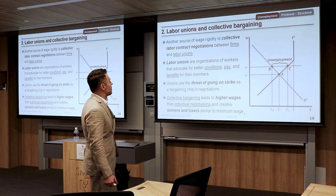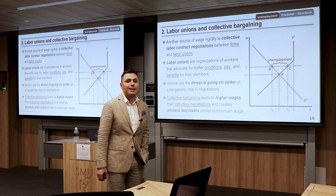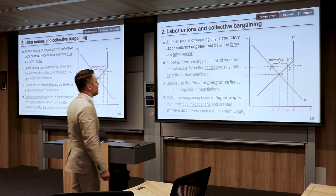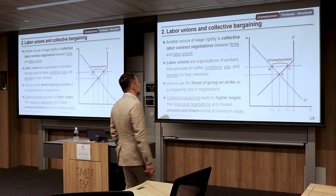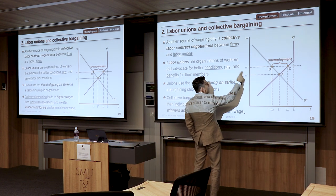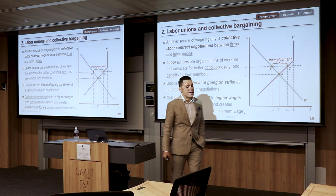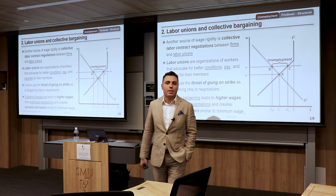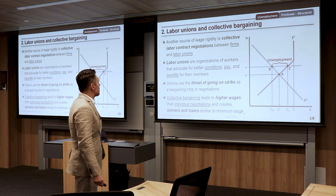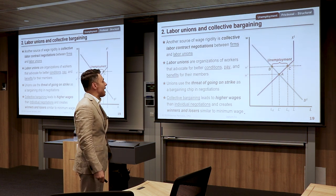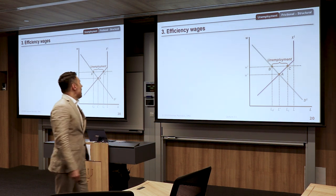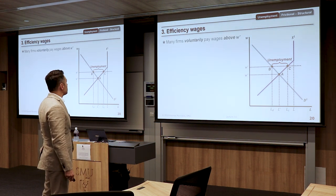Today, labor unions in Western countries are not very relevant. In specific professions they still exist, but mostly as watchdogs rather than powerful negotiators. Collective bargaining leads to higher wages than individual negotiation by giving workers market power, creating the same winners-and-losers pattern as minimum wage legislation.